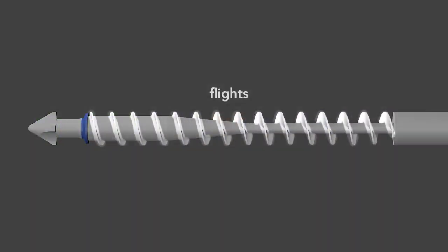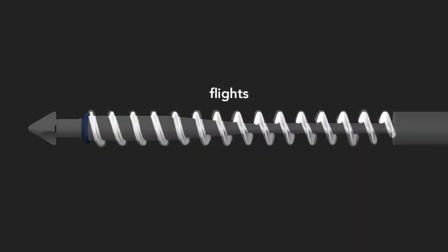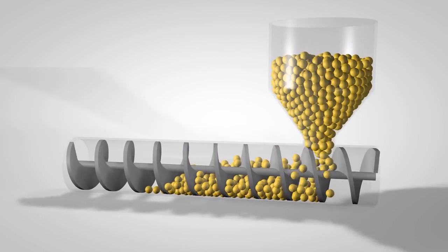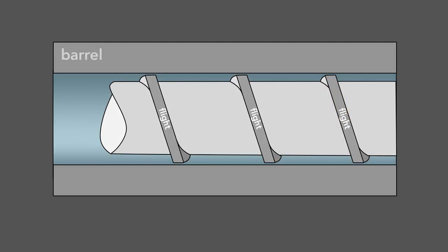Second, the screw has flights that wrap around the shaft. As the screw rotates, the flights transport the raw material forward through the barrel. The flights also serve to mix the plastic. The screw action agitates the melting pellets within the flights to create a uniform mixture.